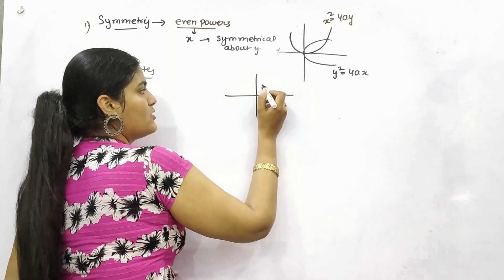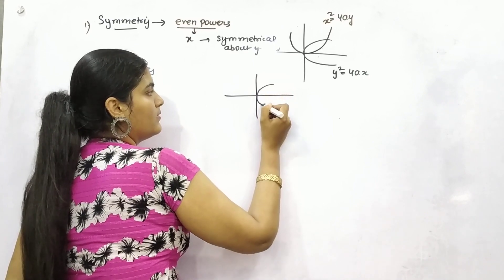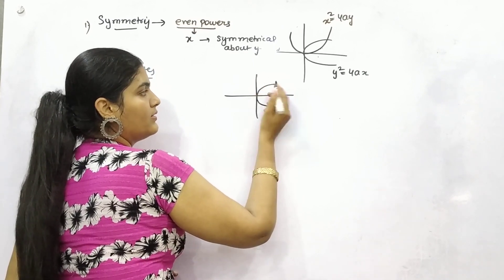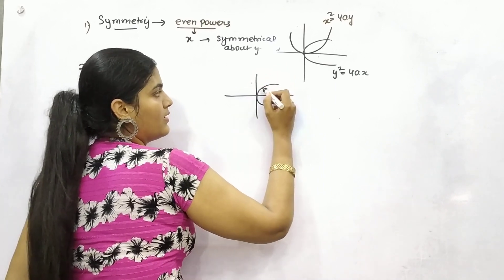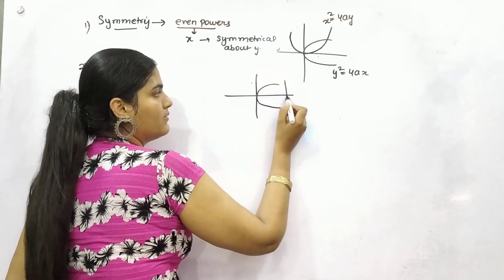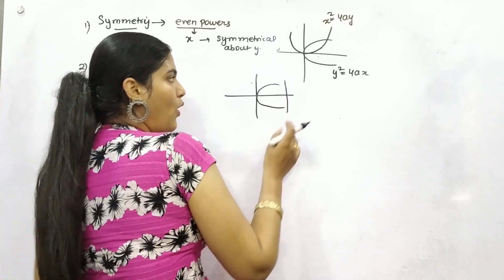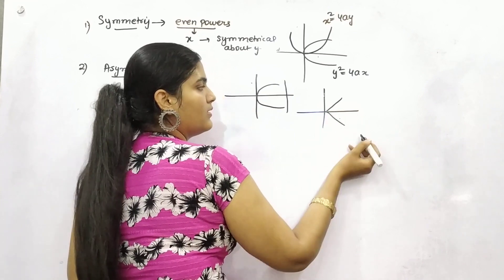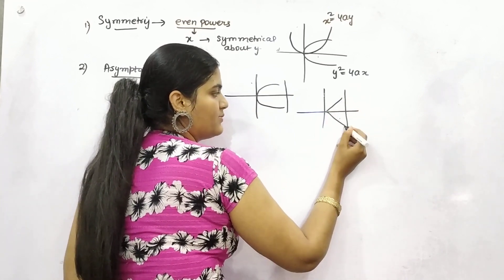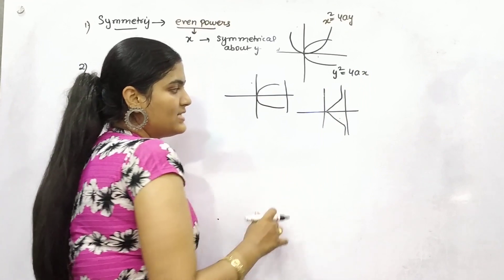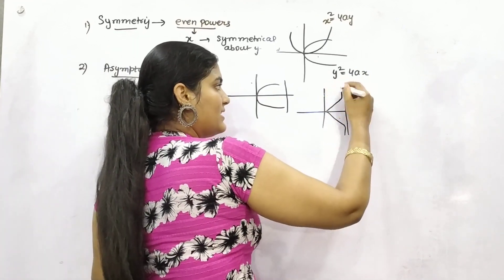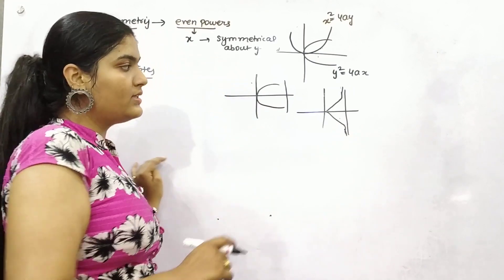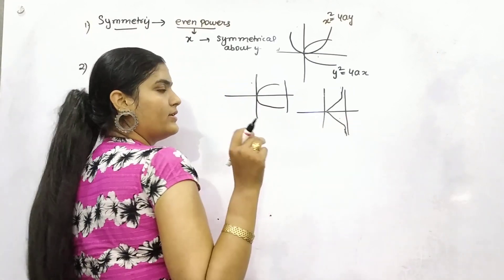So let's say this is your curve and you are having your asymptote in touch somewhere, here for example. You can see it will intersect at some infinite point.